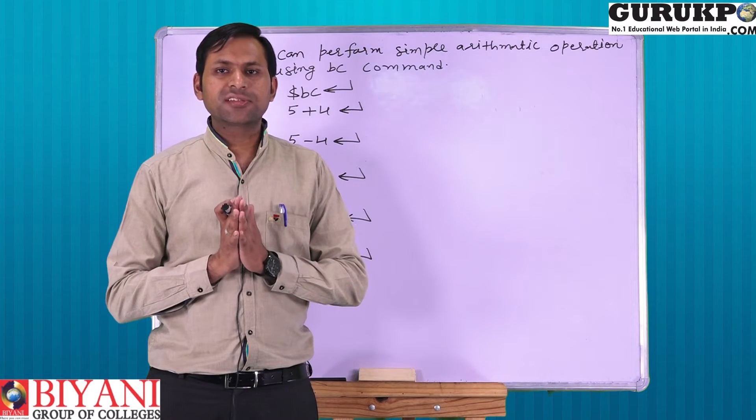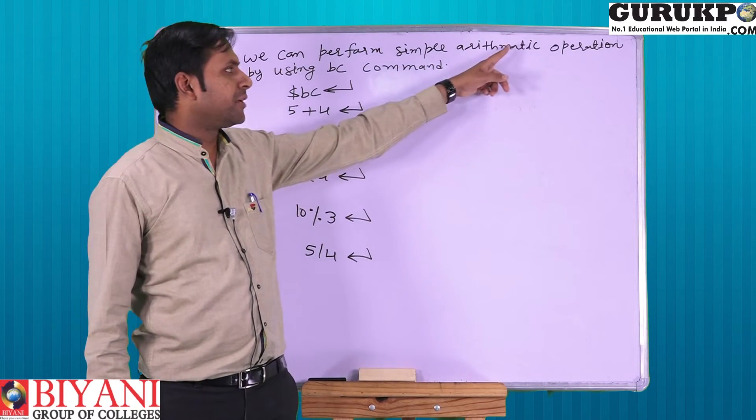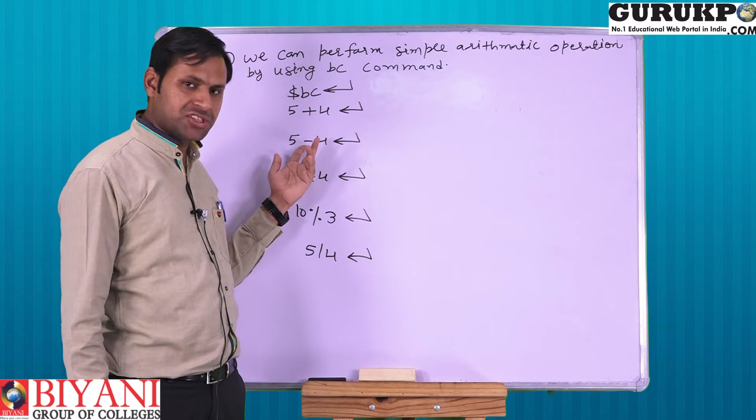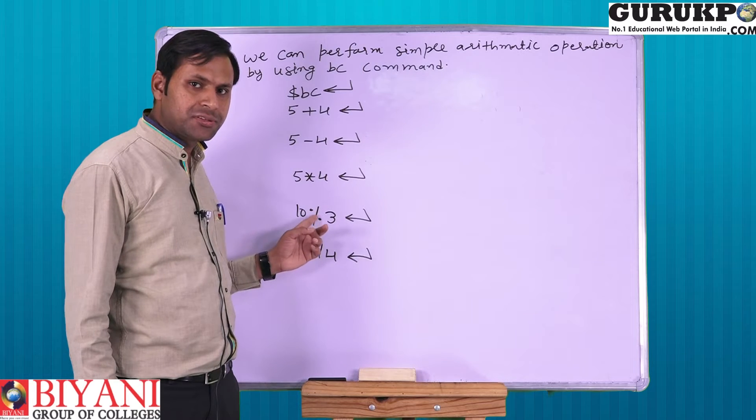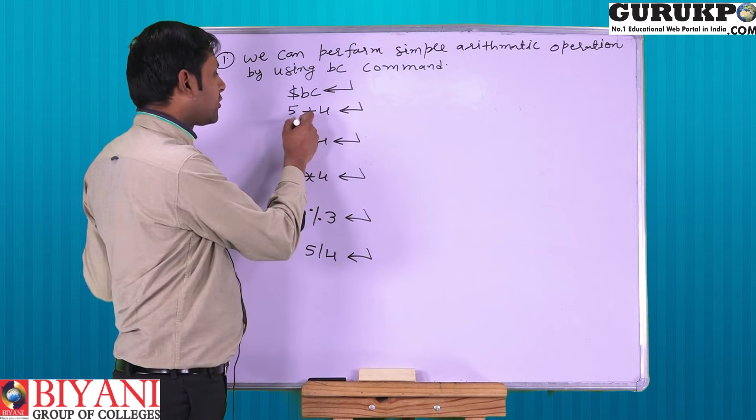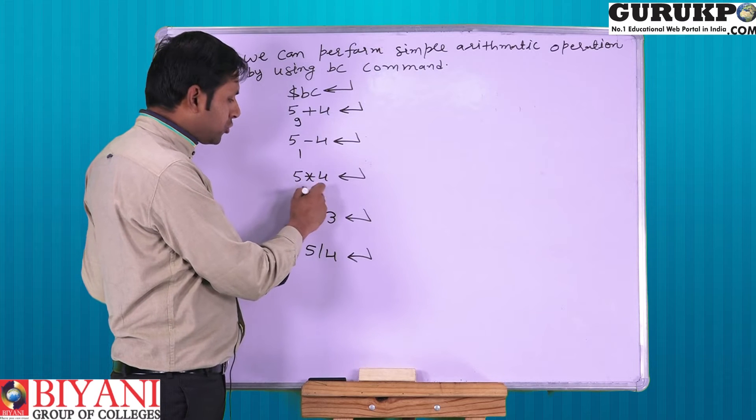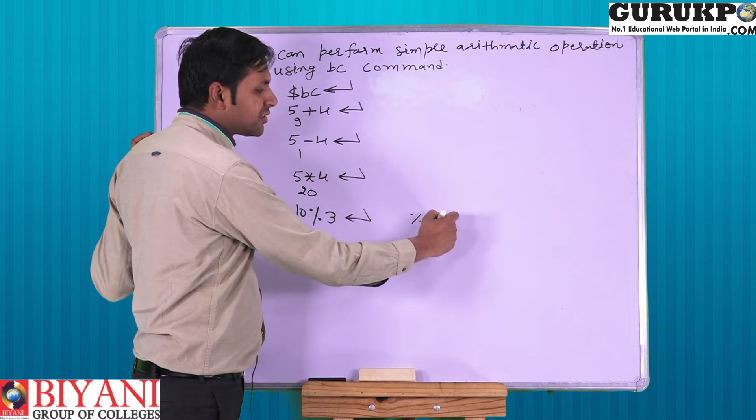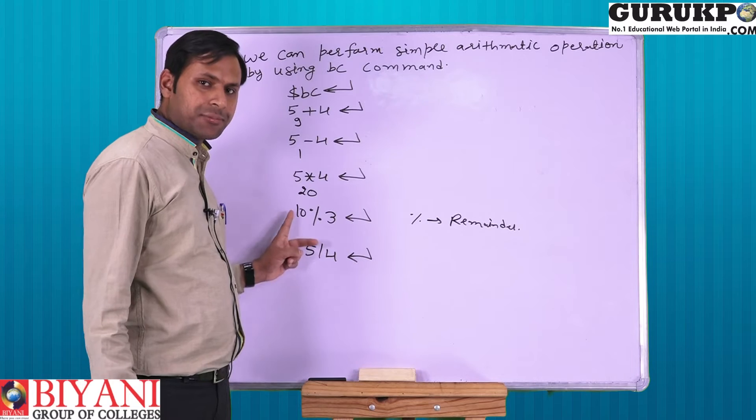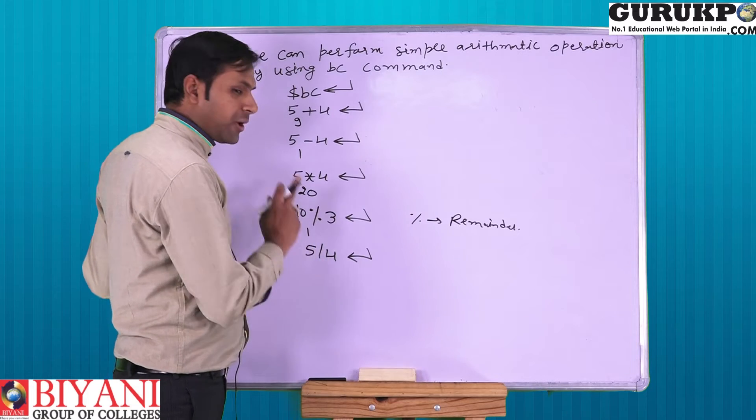The basic first task which we can do in BC command is simple arithmetic operations. Simple operations like addition, subtraction, multiplication, modulus, remainder, and division. We can perform here. 5 plus 4, we get 9. 5 minus 4, 1. 5 into 4, 20. 10 modulus, modulus is remainder, divide 10 by 3, 3 times remaining is 1, so we got 1. And last is 5 by 4.